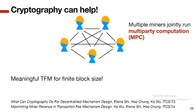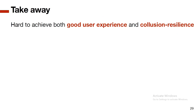In previous work we consider a different model where the mechanism is run by multiple miners instead of a single miner. These multiple miners can jointly run a cryptographic primitive called multi-party computation. In that case we can have a meaningful fee mechanism, and this will be the core topic of the next talk.